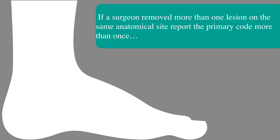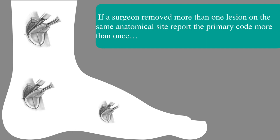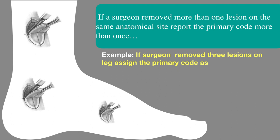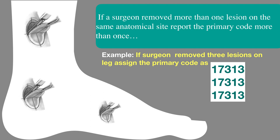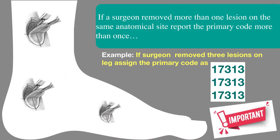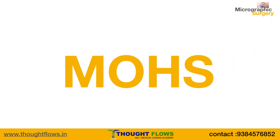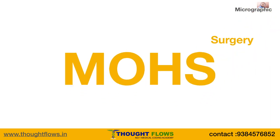The next key point is when to report the primary Mohs code more than once. When the surgeon performs surgery on more than one lesion on the same anatomical site, the primary code should be reported more than once. For example, if the surgeon removes three lesions on the leg, we report 17313 three times.